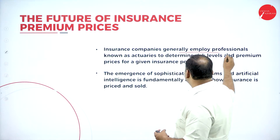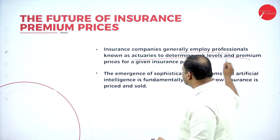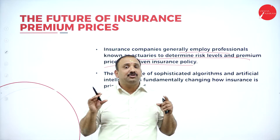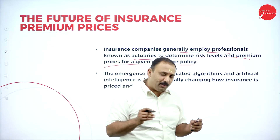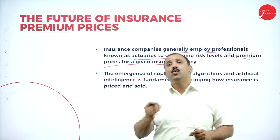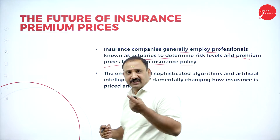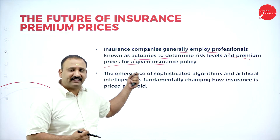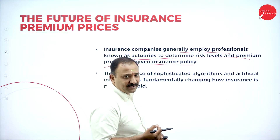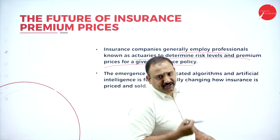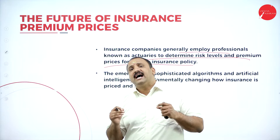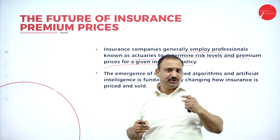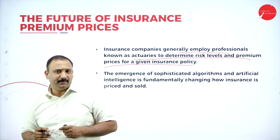Insurance companies generally employ professionals known as actuaries to determine risk levels and premium prices. Insurance companies do not determine prices through a magical formula — they use qualified actuaries trained in actuarial science, which covers financial modeling, risk factors, and premium factors, enabling them to determine what premium needs to be charged for which kind of policy. This involves a lot of financial modeling and statistics.